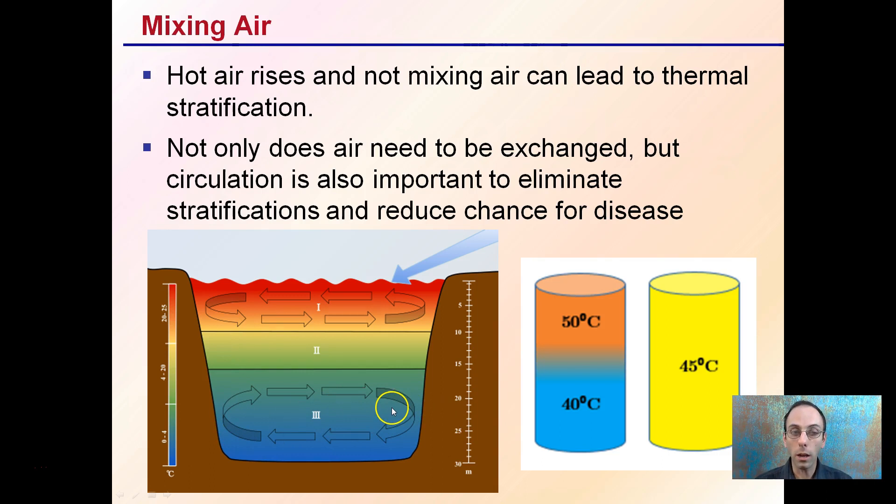Not only does air need to be exchanged between the inside and the outside, but circulation is important to eliminate this stratification and reduce the chance of disease. So rather than have 50 degrees Celsius up here and 40 down here, you want about 45 mixed around. This gives you the idea of having everything homogenized.